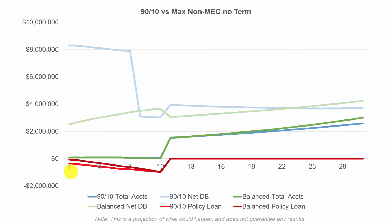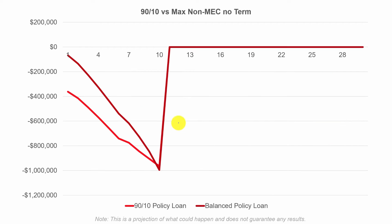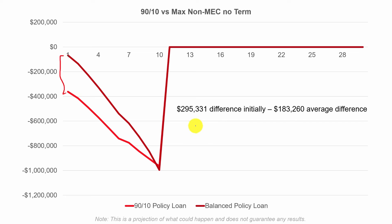We can also add in the policy loans. If we isolate the policy loans by themselves for the first 10 years, you can see that $300,000 difference initially, and they get closer over time as we take larger policy loans from the balanced option closer to year 10. Overall, the 90-10 policy example has $181,000 more outstanding in policy loans over those first 10 years than the balanced option, so that comes with an interest cost.